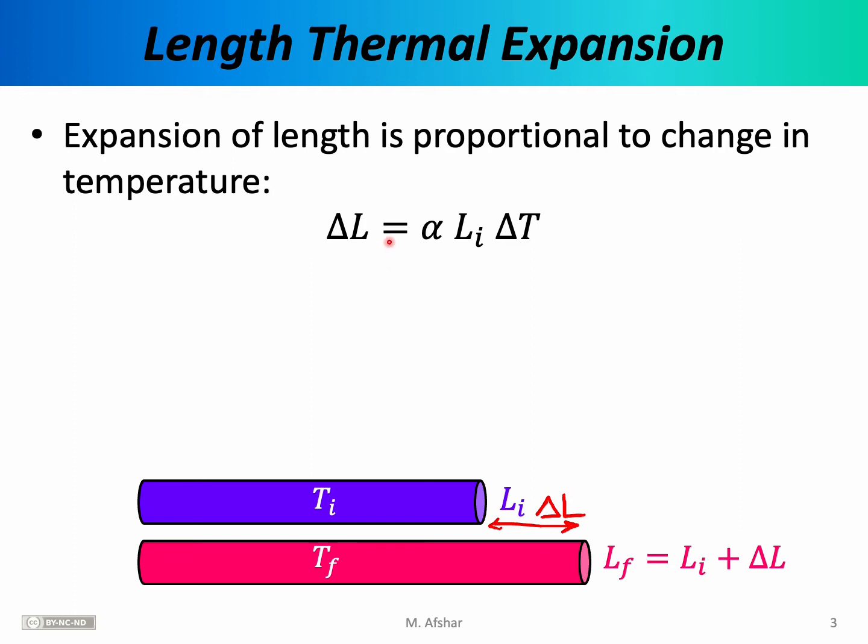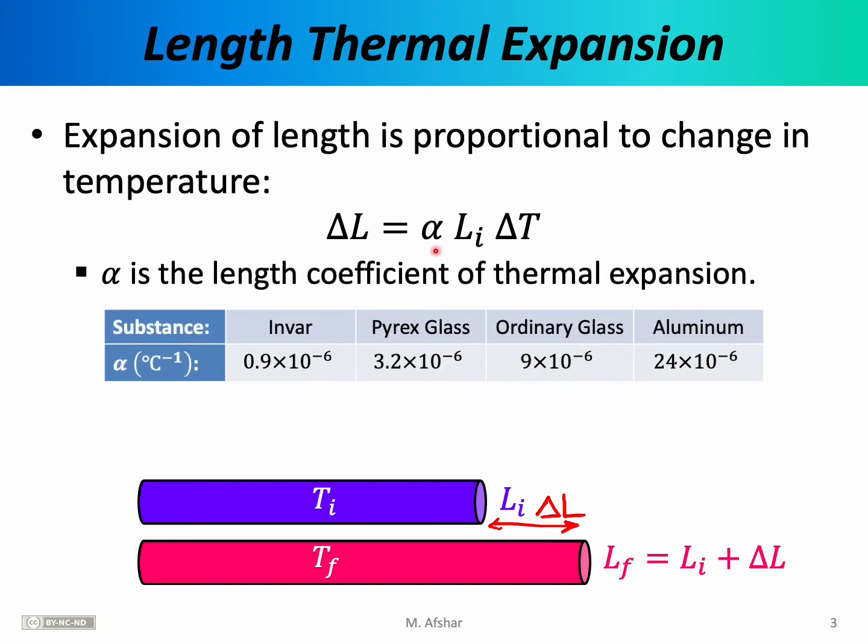To calculate delta L, we'll need this equation. Delta L, that is the change in the length of the rod, is equal to some constant alpha times the initial length of the rod times the change in the temperature of the rod. The constant that appears in the front is known as the length coefficient of thermal expansion, and it's a constant that depends on the material or the substance of the rod, so it's different for different materials.